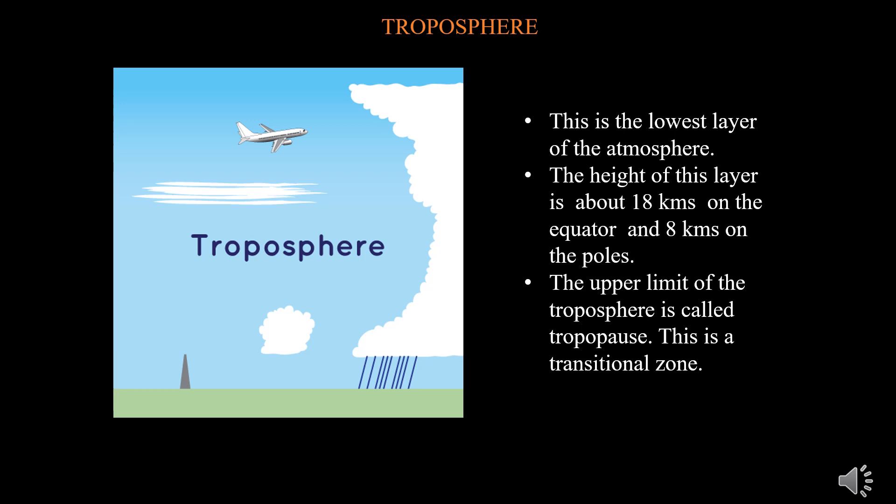The troposphere is the lowest layer of the atmosphere. The height of this layer is about 18 kilometers at the equator and 8 kilometers at the poles. The main reason for the greater height at the equator is due to the presence of strong convection currents that push the gases upward. This is the most important layer of the atmosphere because all kinds of weather changes take place only in this layer. Due to these changes, development of living world takes place on the earth. The air never remains static in this layer; therefore, this layer is called the changing sphere or troposphere.